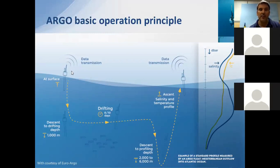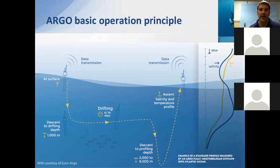Data are then transmitted by floats through Argos 2 or Iridium satellite systems, and collected by the Global Data Assembly Center, called the GDAC, where different levels of quality control (QC) are applied. This starts from near real-time in automatic mode, up to an additional level that requires scientific expertise — with delays up to one year — which we call the delayed mode. Then all data will be available and shared to the entire scientific community.